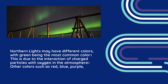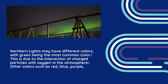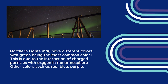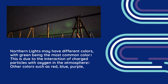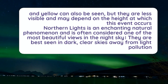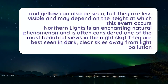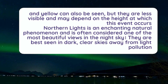Northern Lights may appear in different colors, with green being the most common. This is due to the interaction of charged particles with oxygen in the atmosphere. Other colors such as red, blue, purple, and yellow can also be seen, but they are less common and may depend on the altitude at which the interaction occurs.